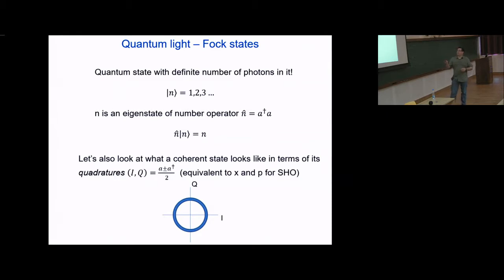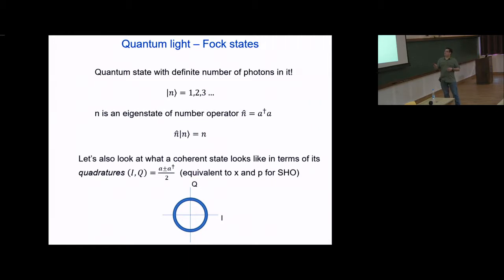These number states are eigenstates of the number operator a†a, where these are the usual creation and annihilation operators, so that this operator acting on |n⟩ gives us just a number times the original state.